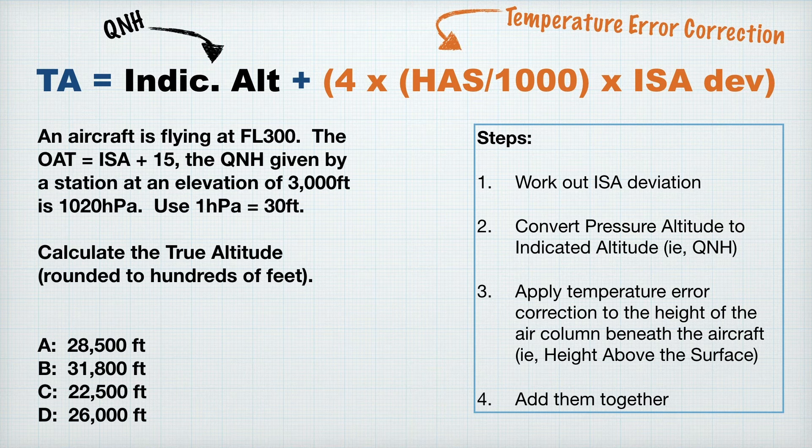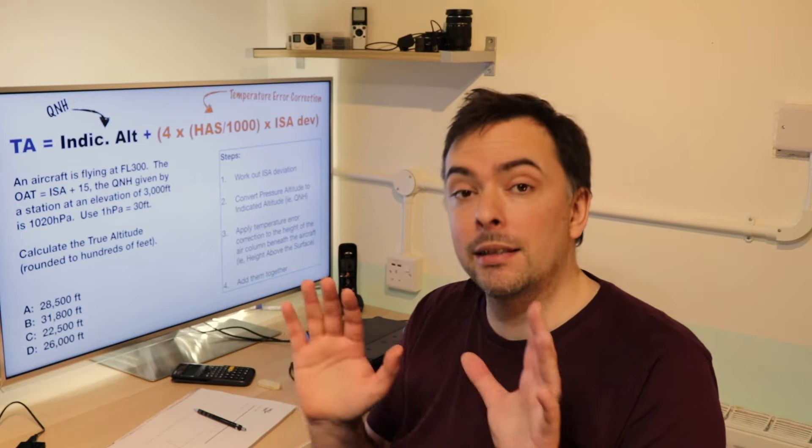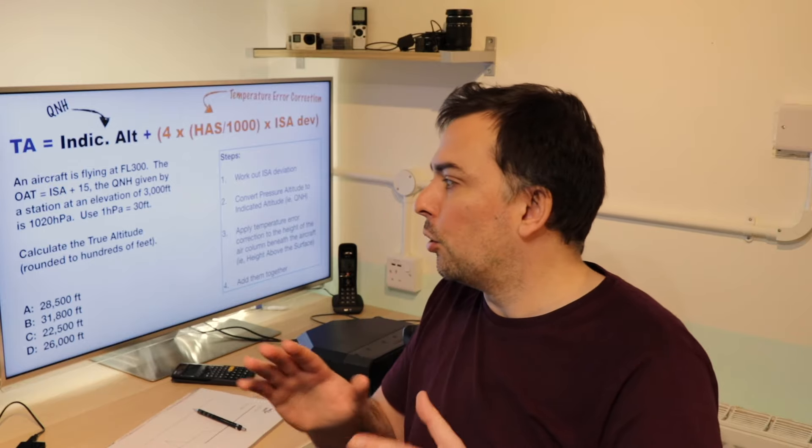The question says, an aircraft is flying at flight level 300. The outside air temperature is ISA plus 15. The QNH given by a station at an elevation of 3000 feet is 1020 hectopascals. Use 1HPA equals 30 feet. Calculate the true altitude and round to hundreds of feet. There's two things going on here before we do anything. Firstly, they're telling us to use 1 hectopascal is equivalent to 30 feet, so I'm not going to do 27 this time.